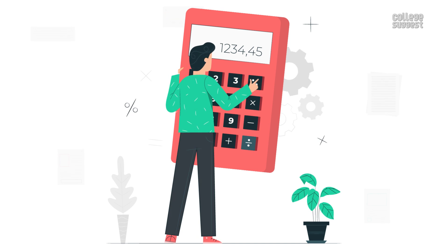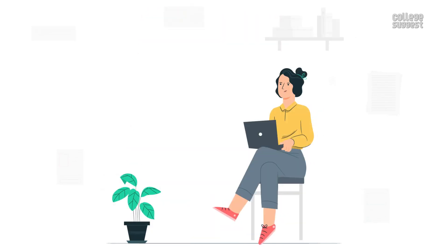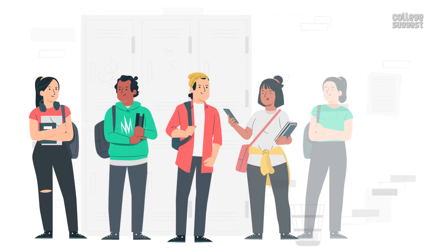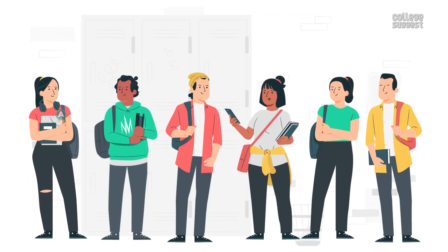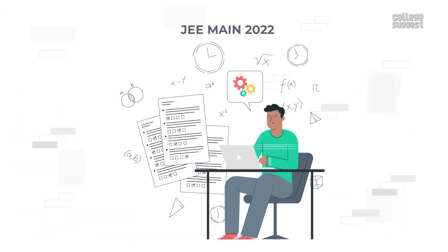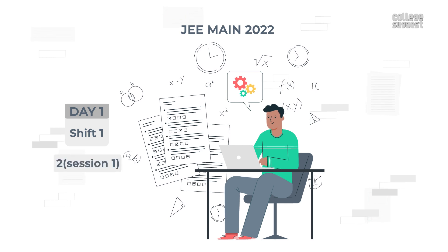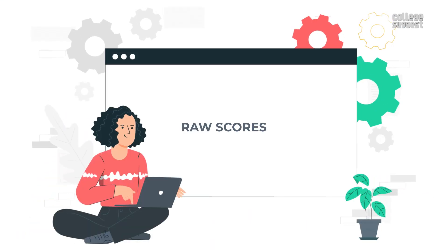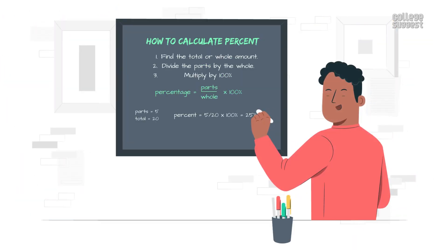Let us now give you some example scores to calculate percentile and to understand the method to predict the rank system. Assume six candidates — A, B, C, D, E, and F — attempted JEE Main 2022 on day one, shifts one and two of session one. The raw scores obtained by the candidates are as follows. We have assumed the scores just to show how to calculate percentile.